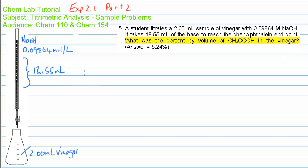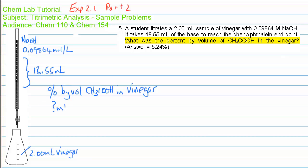We have to determine the percent by volume — that is what the question is asking — the percent by volume of acetic acid in the vinegar. What exactly does that mean? It means the number of millilitres of acetic acid per 100 millilitres of vinegar.